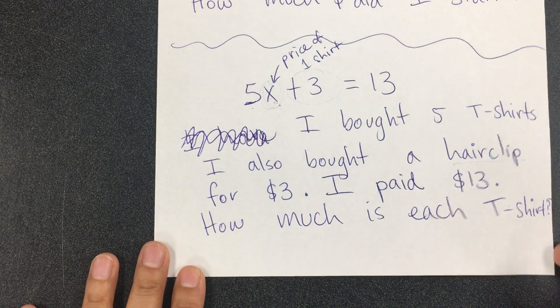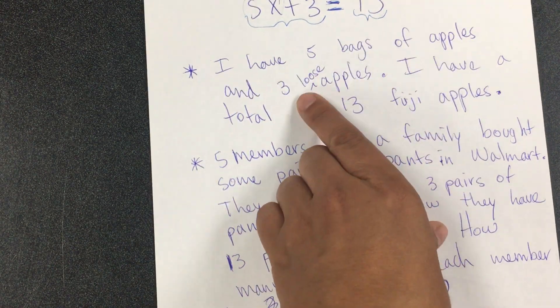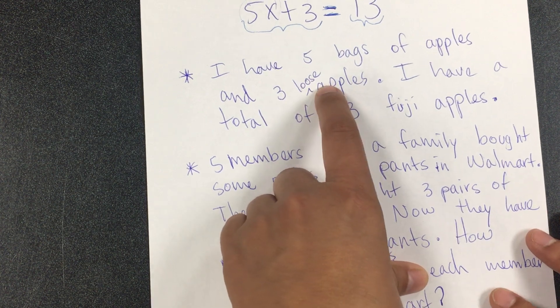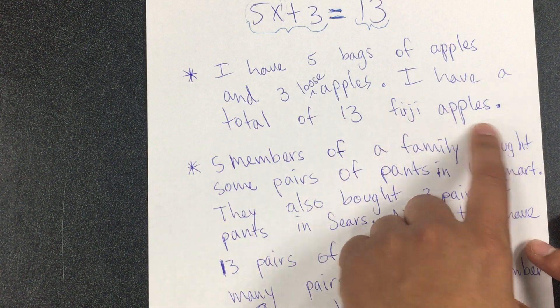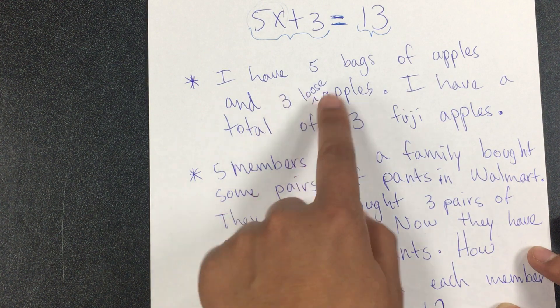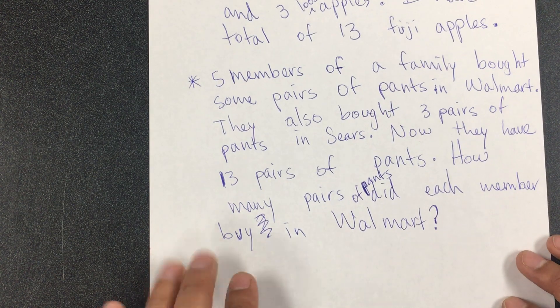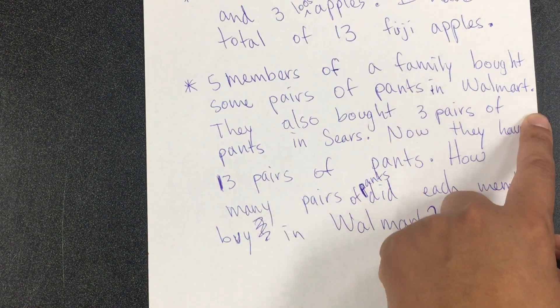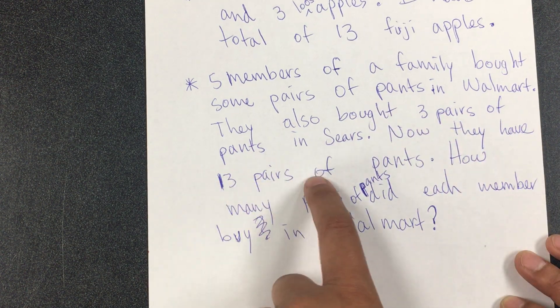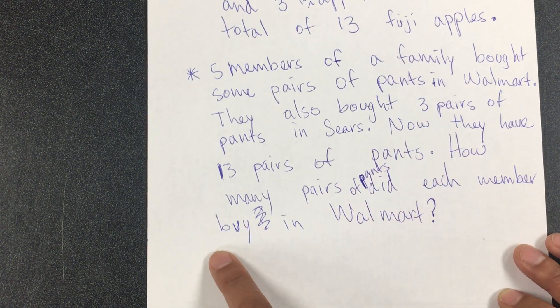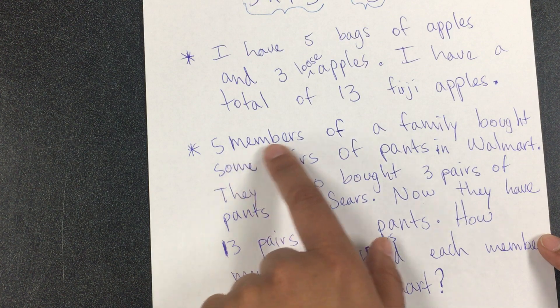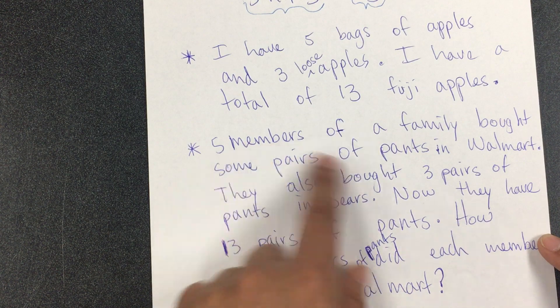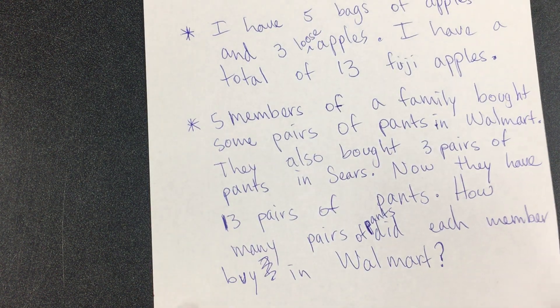Other student examples for 5x + 3 = 13: 'I have five bags of apples and three loose apples — loose means sueltas — I have a total of thirteen Fuji apples. Each bag has two apples.' Another: 'Five members of a family bought some pairs of pants in Walmart and also bought three pairs in Sears. Now they have thirteen pairs. How many pairs did each member buy in Walmart?' — again, some means we don't know how many. That's it for section 2.1. I hope you have fun!